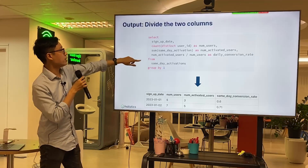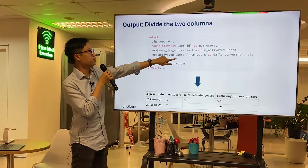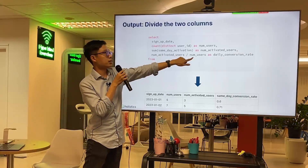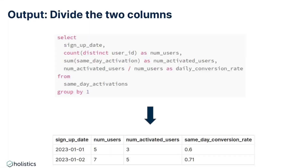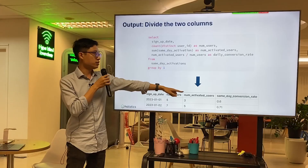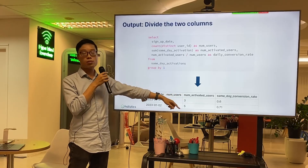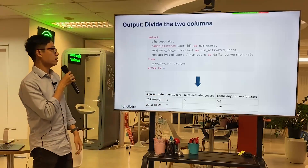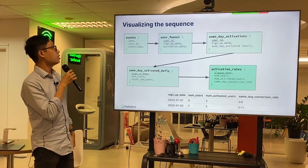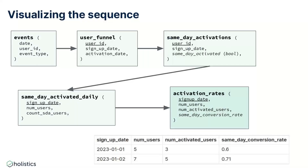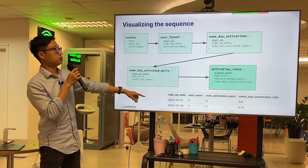You then divide the number of activated users by total users to get the metric Bob asked for — for example, 0.6 or 0.71.